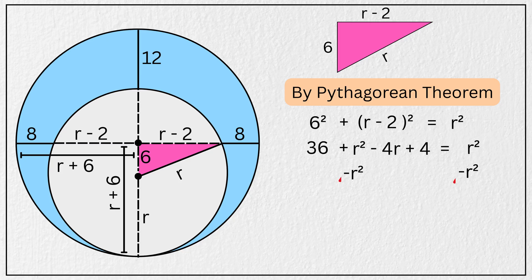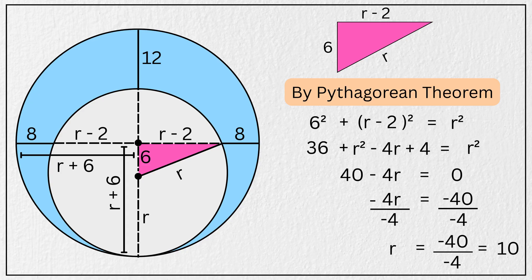Now cancelling r squared from both sides, we get 40 minus 4r equals 0. Again, subtracting 40 from both sides, we get negative 4r equals negative 40, and dividing both sides by negative 4, we get r is equal to negative 40 divide by negative 4, which is equal to 10 units.